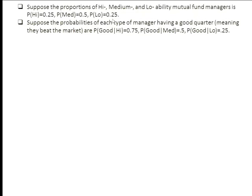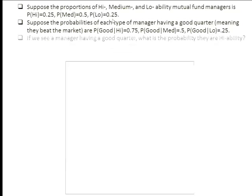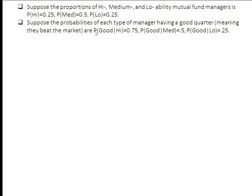So that's our base rates. Now what we need are the conditional probabilities that we would observe good or bad outcomes — meaning beating the market or not beating the market — for any given type of manager. The probability that you'll have a good outcome if you're a high ability manager is 0.75. The probability if you're a medium quality manager is 0.5, and the probability if you're low ability is 0.25.